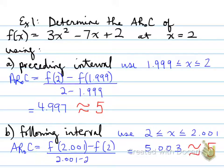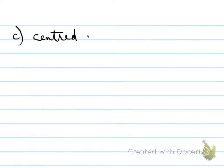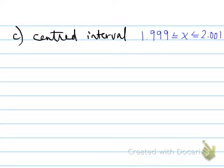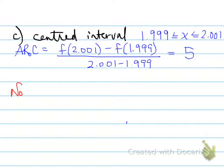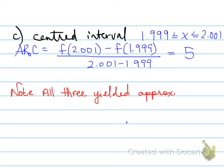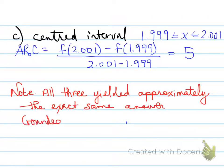So, interesting — the preceding interval gives us approximately 5, and the following interval gives us almost 5. For the centered interval, we use 1.999 and 2.001 — that's 0.001 before and 0.001 after. When you plug it in, don't forget the denominator is 0.002. That gives us an exact value of 5. All three yielded approximately the same answer, rounded to the nearest number: 5. So regardless of which interval we use, we can determine the average rate of change.